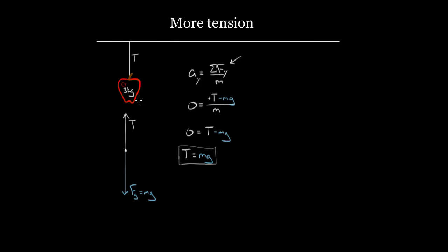Why would it not be equal to mg? Imagine if someone pulls down on the apple with an extra five Newtons — pulling this apple, which pulls the string, which makes it tighter. What would I do? I've got one more force in my force diagram: five Newtons pointing downward. So when I come to my net force, I've got to subtract five Newtons because that's pointing downward. Then I do my algebra as before, multiply both sides by m, and I'll have an extra minus five Newtons.